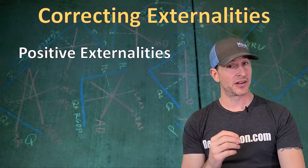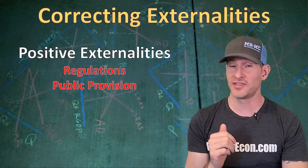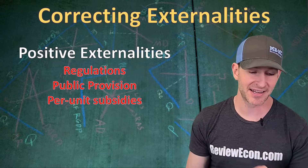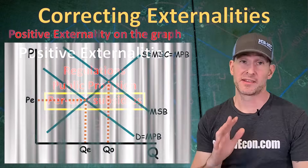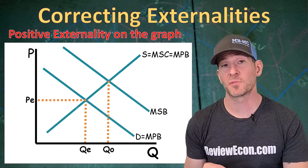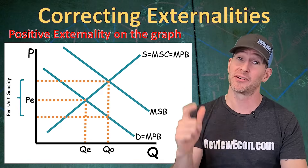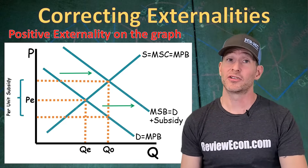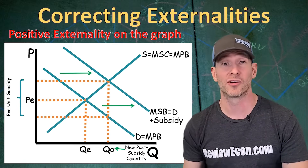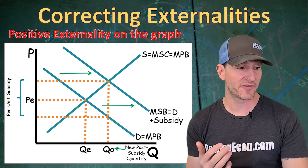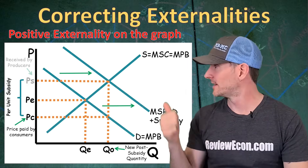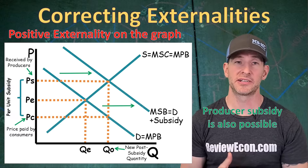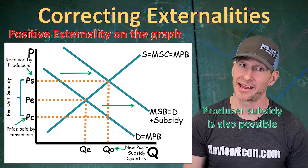For positive externalities, the government can use regulations, public provision, or per unit subsidies — with per unit subsidies being the preferred answer on the AP microeconomics exam. A per unit subsidy equal to the external benefit — the gap between marginal private benefit and marginal social benefit — will shift the demand curve right until it merges with the marginal social benefit curve, bringing the new post-subsidy quantity to the allocatively efficient QO. The out-of-pocket expense consumers pay is PC, and the price sellers receive after the subsidy is PS. We could also grant the subsidy to producers and shift the supply curve instead, still reaching the allocatively efficient quantity.